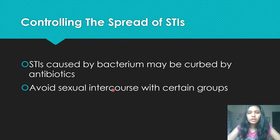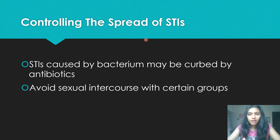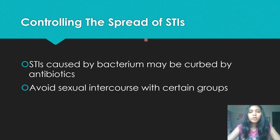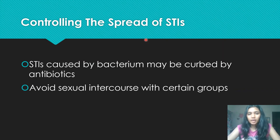To control the spread of STIs, avoid sexual intercourse with certain groups. These groups include: one, prostitutes — people who get paid to have sexual intercourse with others; two, people who casually have sexual intercourse with a lot of other people; and three, people whose sexual background you don't know, because you don't know how many people they've had sexual intercourse with or who they've had it with — they may potentially be STI carriers.